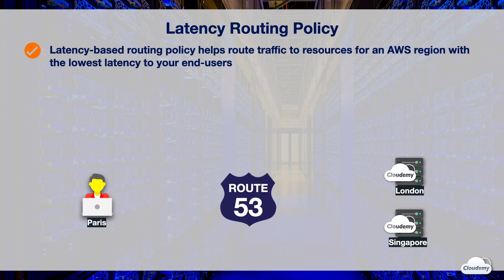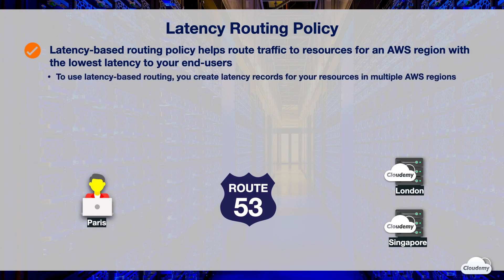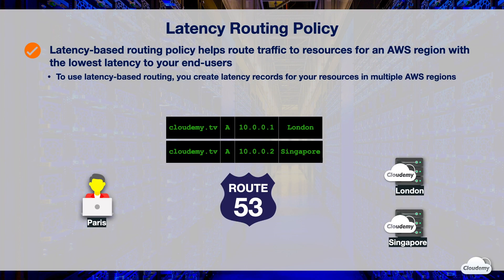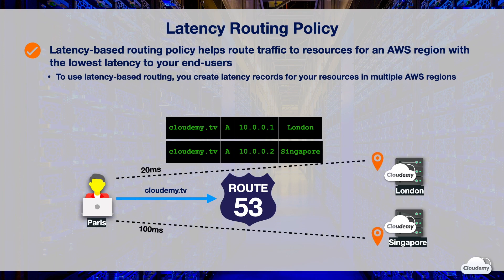Latency-based routing helps serve traffic from the resource that provides the lowest latency. If your application is hosted in multiple AWS regions, you can improve performance for users by serving their requests from the region with the lowest latency. To use latency-based routing, you need to create latency records for your resources in multiple AWS regions. When Route 53 receives a DNS query, it determines which region gives the user the lowest latency, and then responds with the latency record for that region.